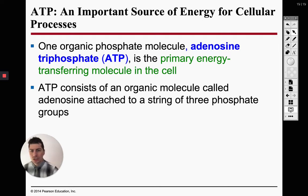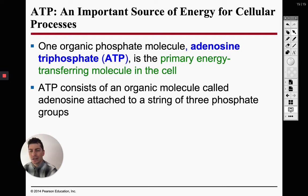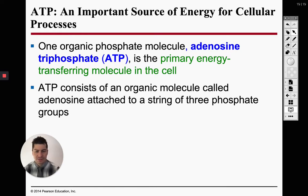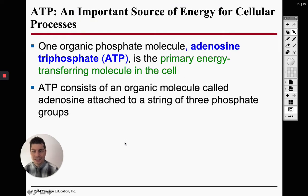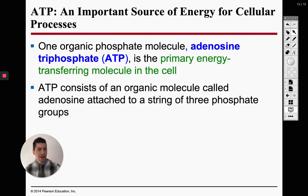ATP is adenosine triphosphate. Let's look at the second word — triphosphate. Tri means three, and phosphate we just learned about as a functional group. So in adenosine triphosphate, we see three phosphates. This is the molecule we use for energy in our bodies. Now, I don't want you to think that you directly use ATP as energy — you actually don't use this molecule directly for energy.